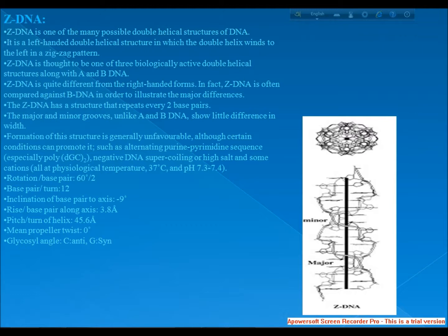The Z-DNA has a structure that repeats every two base pairs. The major and minor grooves, unlike A and B DNA, show little difference in width. Formation of this structure is generally unfavorable, although certain conditions can promote it, such as alternating purine-pyrimidine sequence, especially poly-dGdC, negative DNA supercoiling, or high salt and some cations, all at physiological temperature 37 degrees Celsius and pH 7.3 to 7.4.